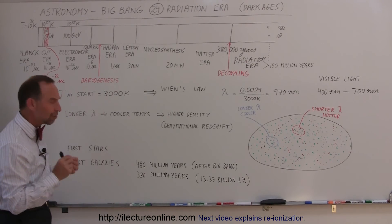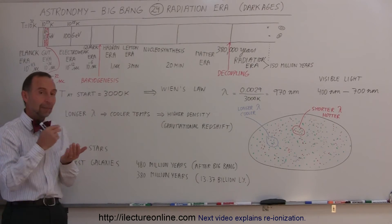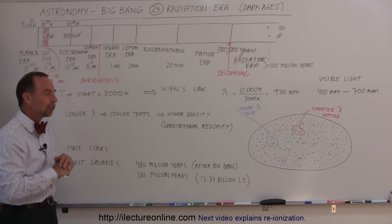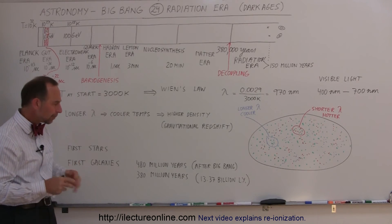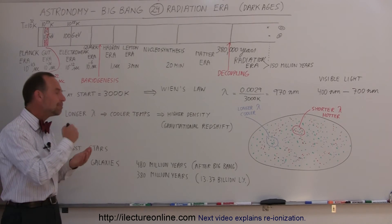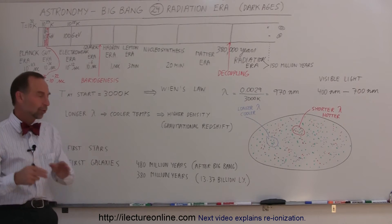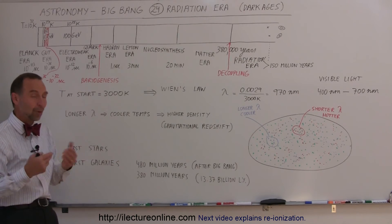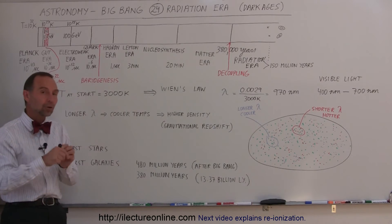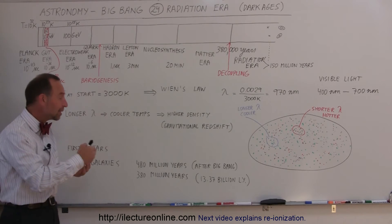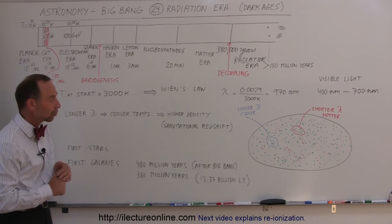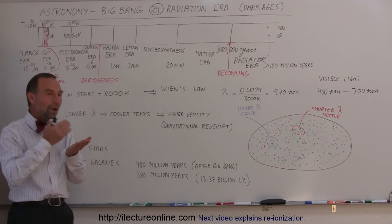In the last few years we actually found some galaxies that formed within less than 1 billion years of the Big Bang. One galaxy was found to be about 480 million years after the Big Bang, so that galaxy is now almost 13.3 or 13.4 billion years old. We found another one that formed about 380 million years after the Big Bang, which is now believed to be about 13.37 billion light years away.